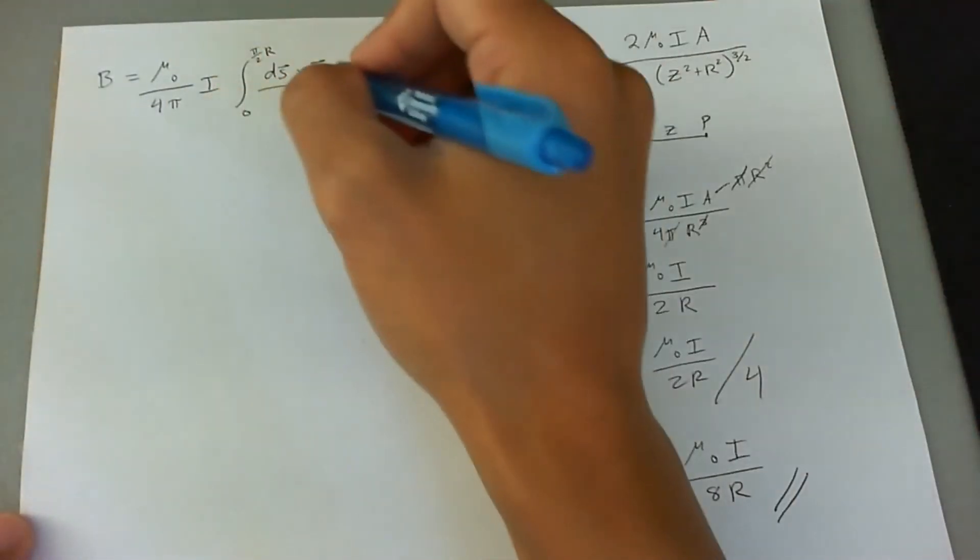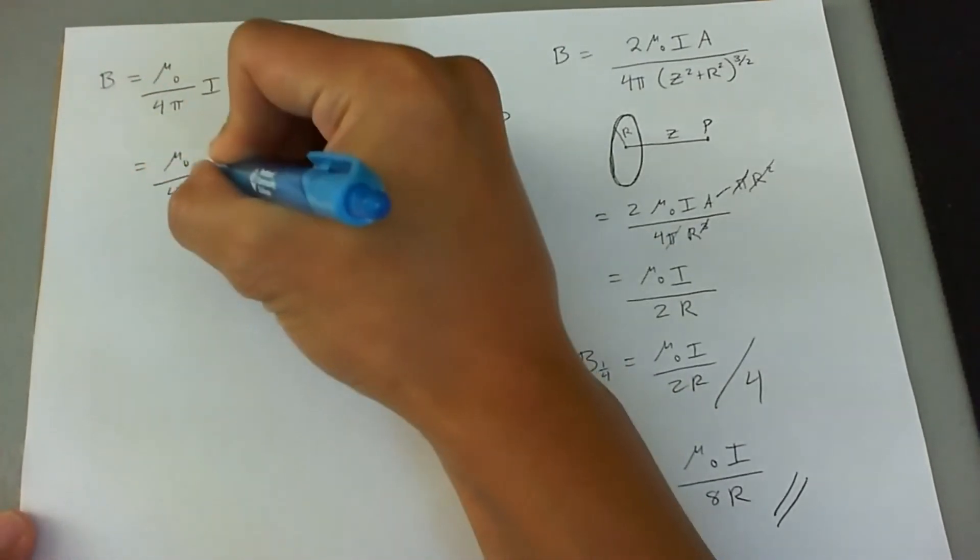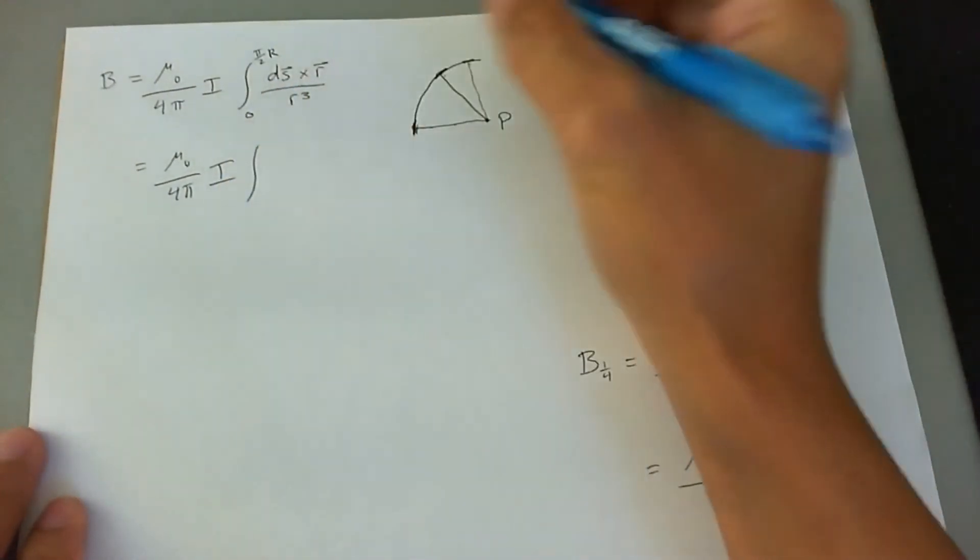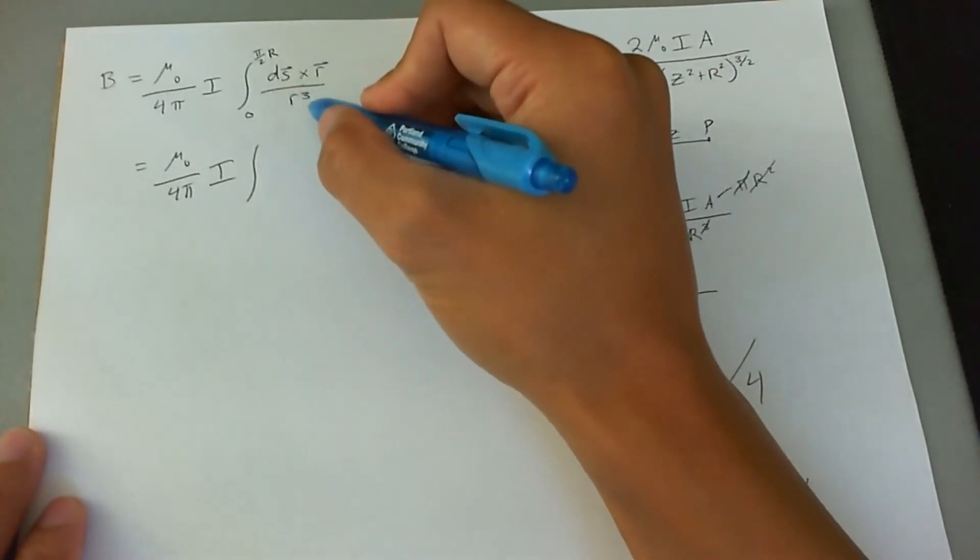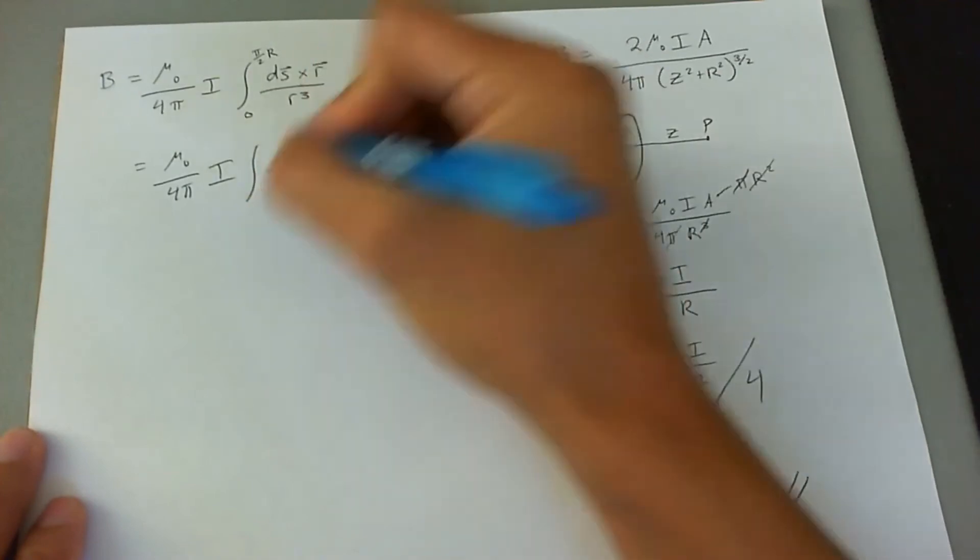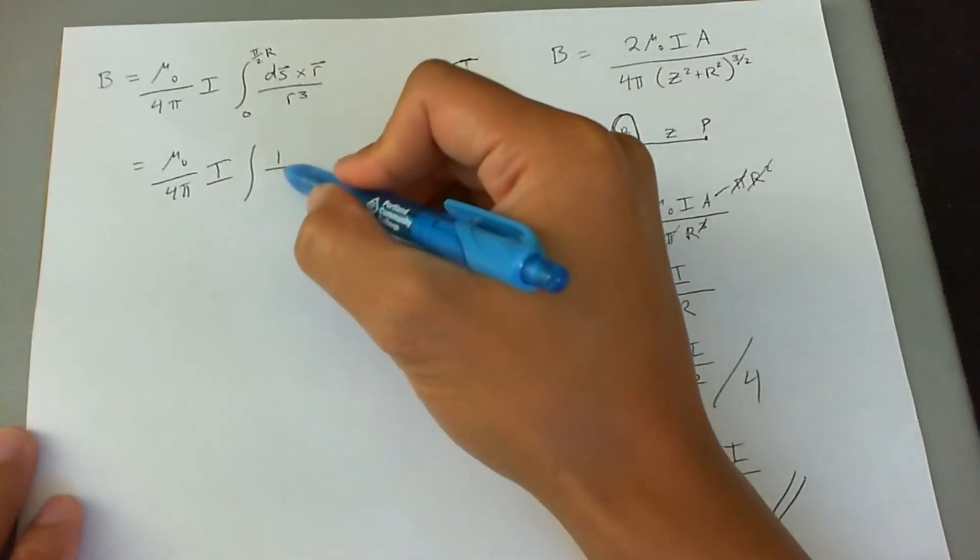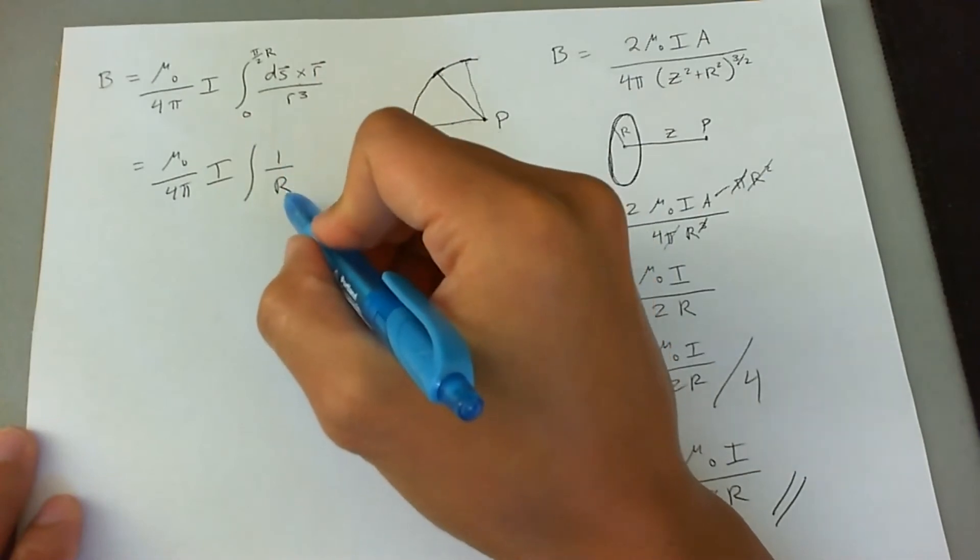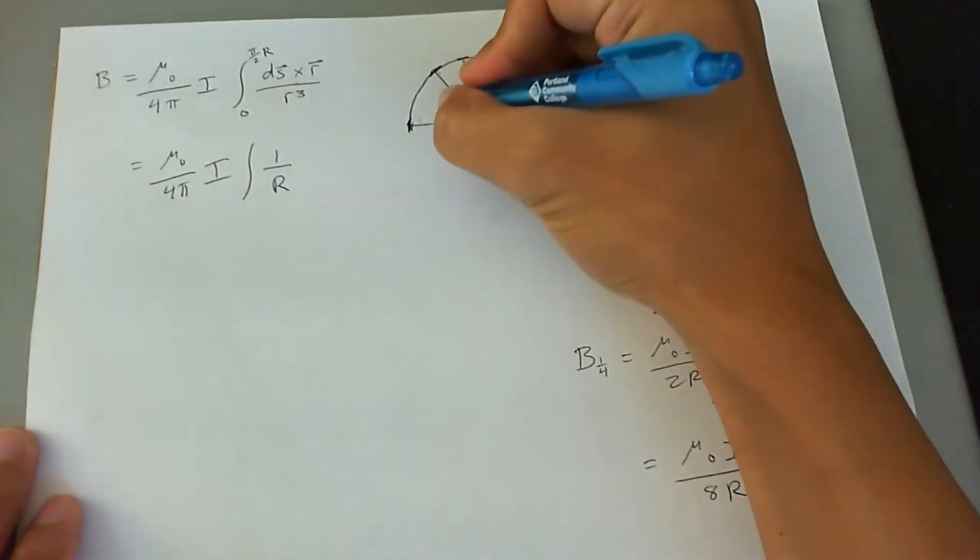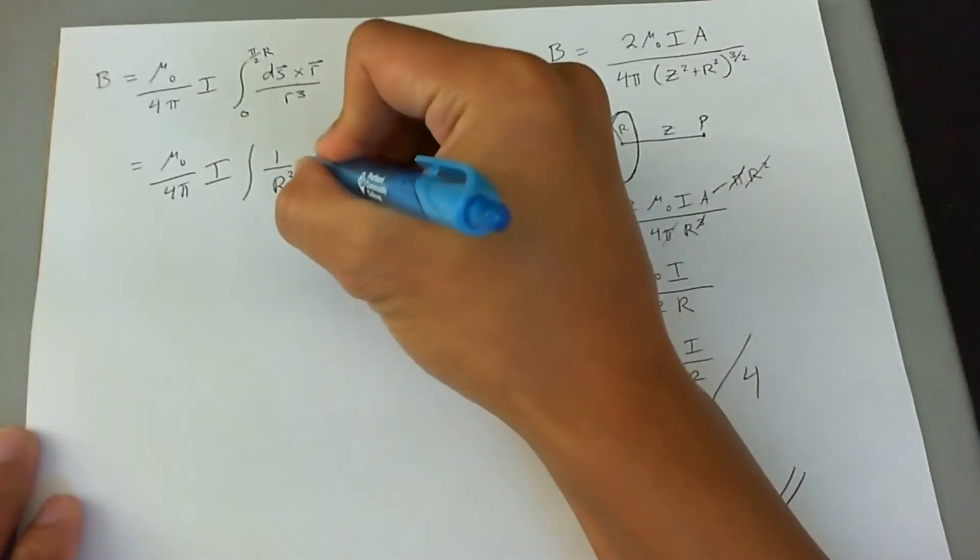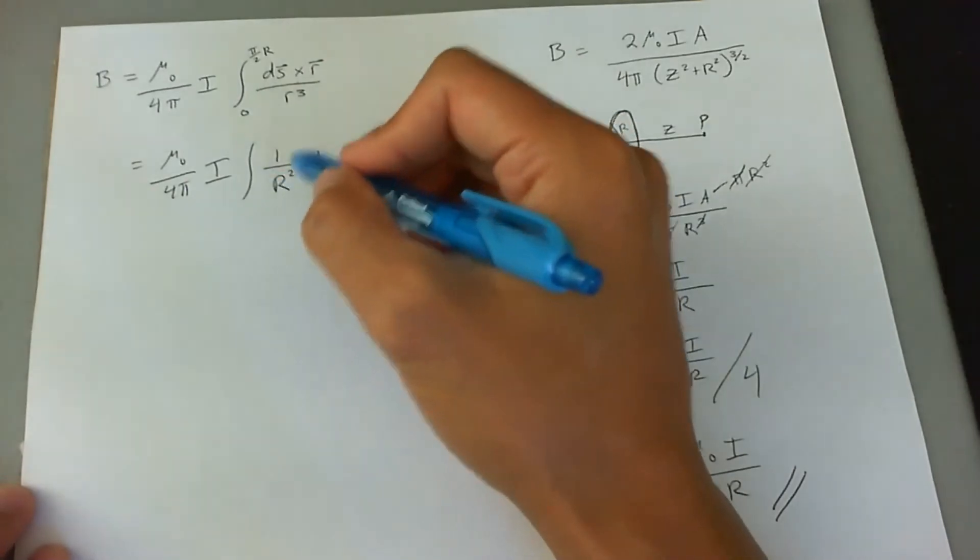Let's go ahead and get rid of that and simplify this a little bit. This will then turn out to be r ds, and one of these r's is going to cancel out with one of the r's on the bottom, so this ends up being one over—let's be consistent with the picture—instead of little r, we'll make this into a big R since that is the radius of the circle. Then we'll go ahead and put ds down here.